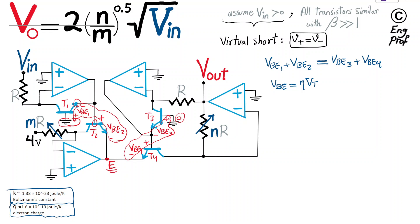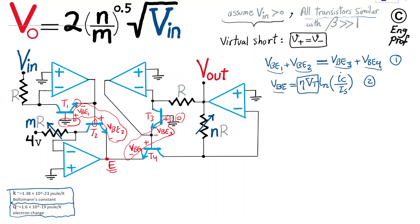The factor η·VT will cancel from both sides of the equation, since it is common to all transistors given our assumption that the transistors are identical. So I'll write the equation without it. Substituting into equation 1, I write for VBE1: ln(IC1/IS), plus for VBE2: ln(IC2/IS), and on the right side for VBE3: ln(IC3/IS), plus for VBE4: ln(IC4/IS). Since all transistors are similar, IS is the same for all of them.